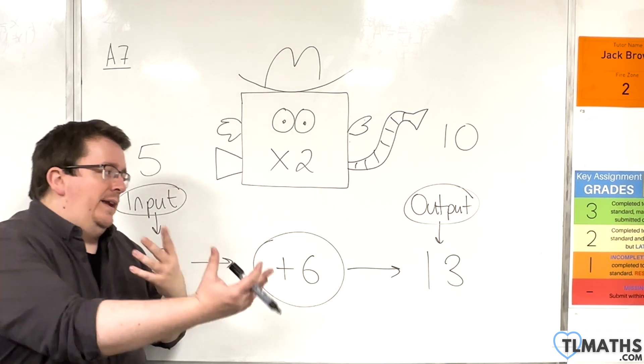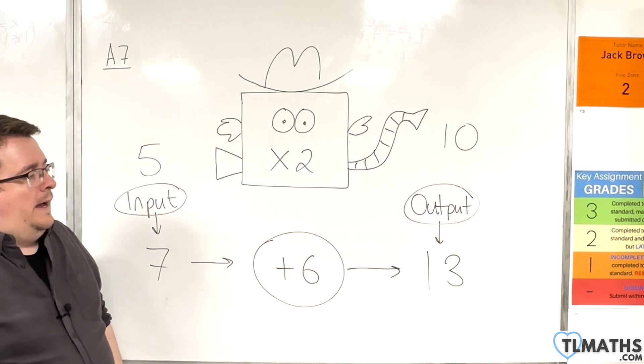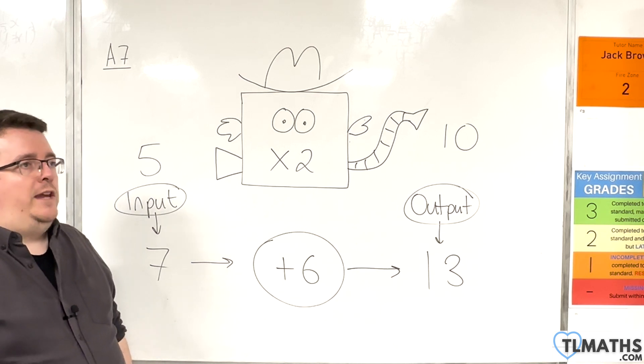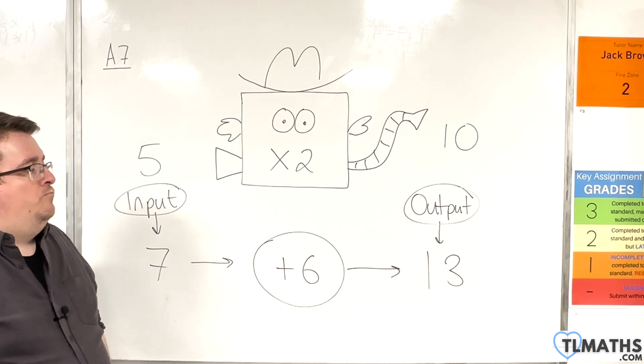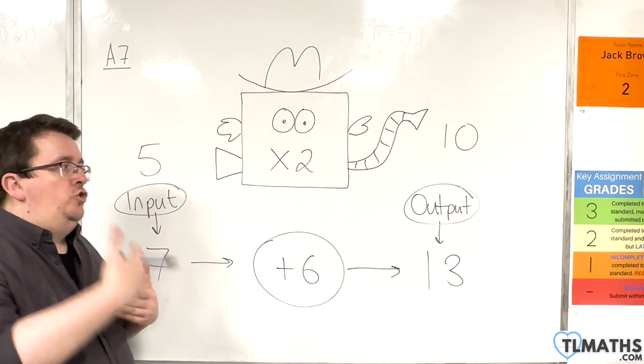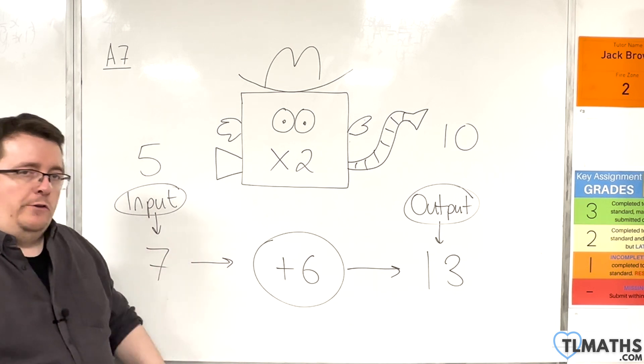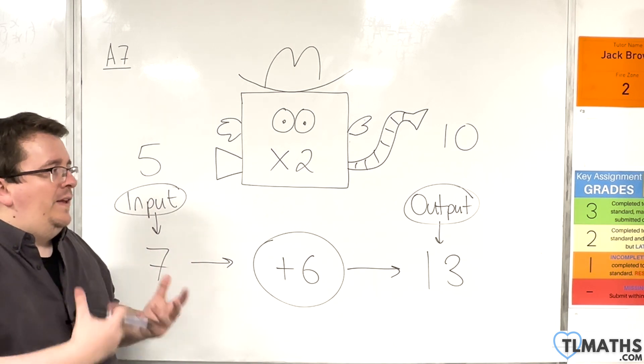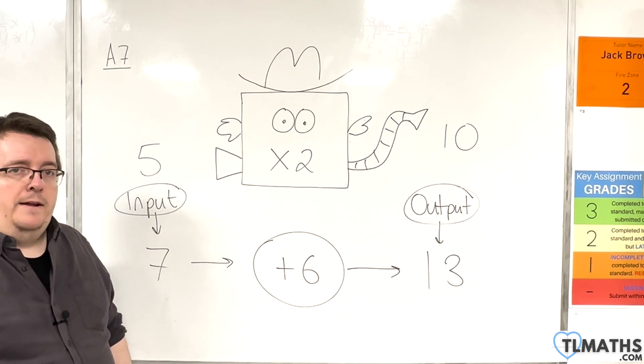But then we're also going to be looking at how we can link that with equations. So, if I gave you the equation y equals 3x take away seven, for example, if you had to draw a pair of function machines, in which order are you doing those operations?